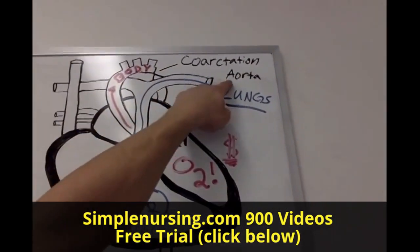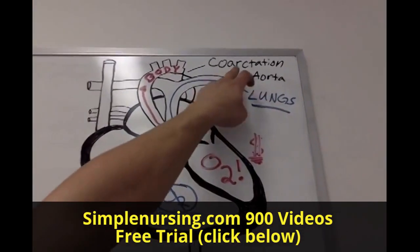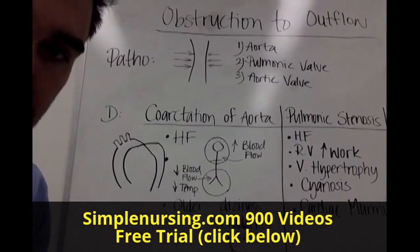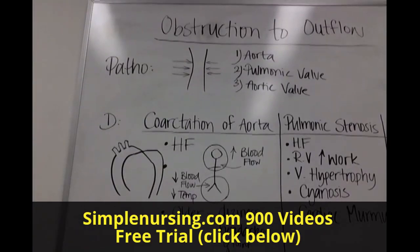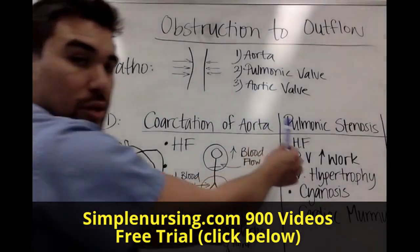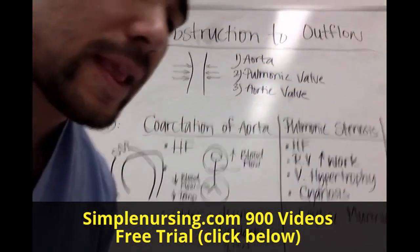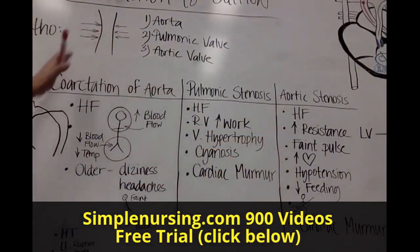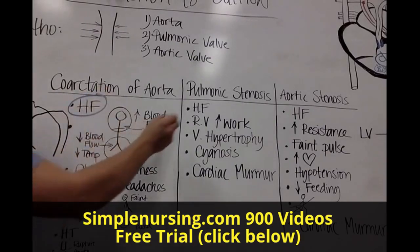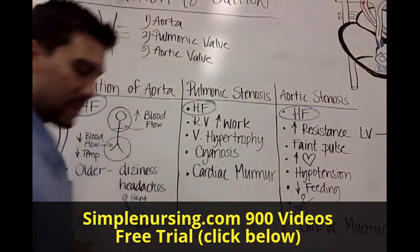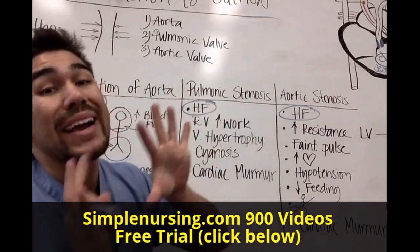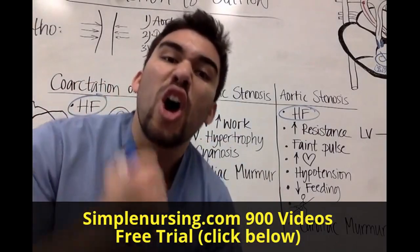That's called coarctation of the aorta. 'Coarctation' is a Latin word meaning to narrow. So the three obstructions of outflow are: coarctation of the aorta, pulmonic stenosis — where the pulmonic valve is getting more narrowed — and aortic stenosis. All of them include heart failure, because they're not letting out blood, causing retention of fluid in the heart, increased pressure, and backup that makes it harder for the heart to pump.